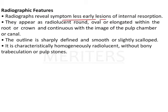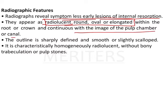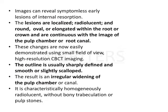Radiographic features reveal symptomless early lesions of internal resorption appearing as radiolucent, oval, elongated, or round areas within the root or crown, continuous with the image of the pulp chamber or canal. The outline is sharply defined and smooth or slightly scalloped, characteristically homogeneously radiolucent without any pulp stones. Changes are now easily demonstrated using small field of view high-resolution CBCT imaging; irregular widening of the pulp chamber is homogeneously radiolucent.